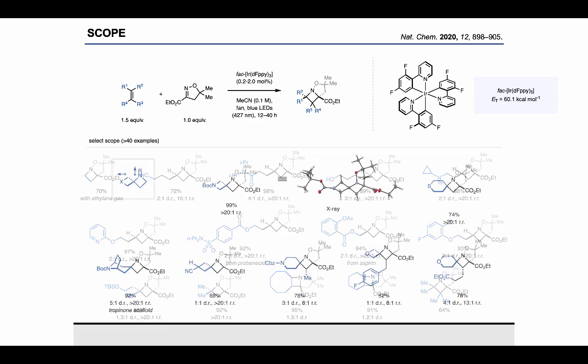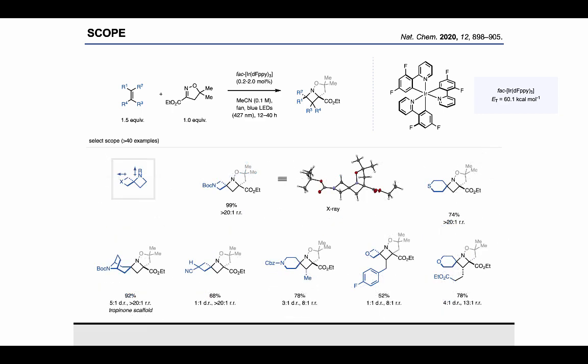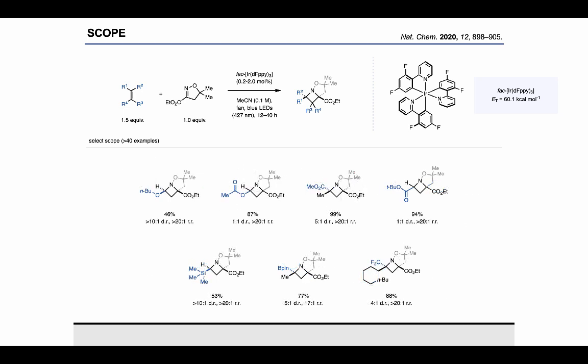Given the interest in azetidine spirocycles in discovery chemistry programs, we were also excited to see that we can readily access these scaffolds by reacting exocyclic alkenes in this reaction. In this way, we can incorporate another azetidine ring as well as other and various sulfur, oxygen, or nitrogen-containing heterocycles. Finally, we also tested functionalized alkenes and we're happy to see that alkenes with both electron-donating or electron-withdrawing substituents are tolerated, such as vinyl ethers or acrylates.